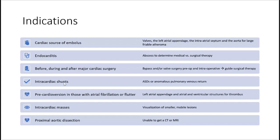Intracardiac shunts — to look for ASDs or anomalous pulmonary venous return. Pre-cardioversion in those with atrial flutter or atrial fibrillation to rule out left atrial appendage, atrial, and ventricular structures for thrombus.